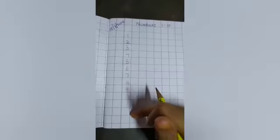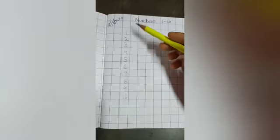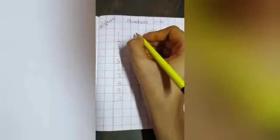Children, this is the formation of numbers. How to write numbers? You have seen now. Now, once again.